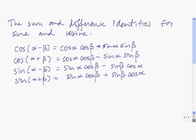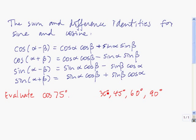To solve this one, what we want to do is express 75 degrees as a combination of the angles that we know. The angles that we know are 30 degrees, 45 degrees, 60 degrees, and 90 degrees. These are the angles for which the trig functions are memorized. We see that if we have 30 degrees and we add 45 degrees, we get 75 degrees. So we're going to express 75 degrees in that way.